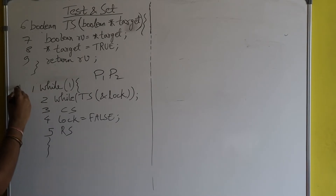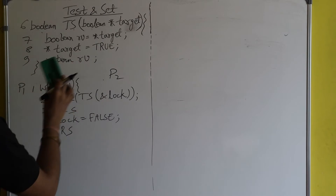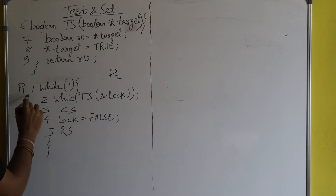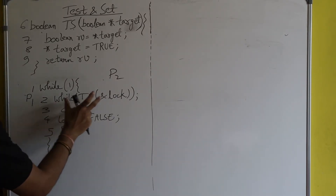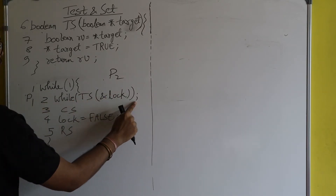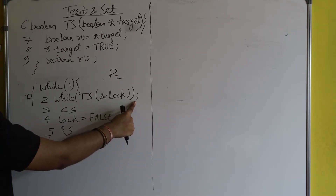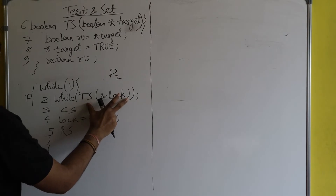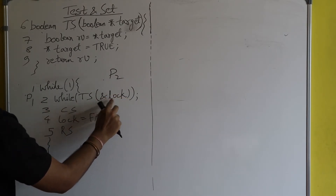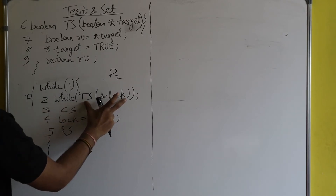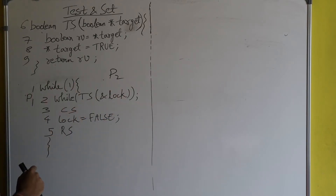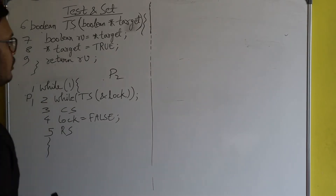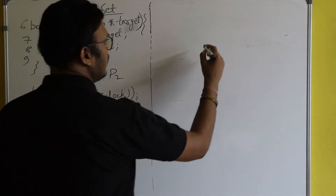Process P1 will execute line number one, then line number two. Line two is a single-statement while loop — notice the semicolon. Inside the bracket is written TS(&lock), so the test-and-set function is being called with the parameter &lock (address of the lock variable).